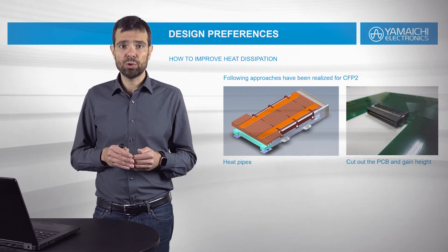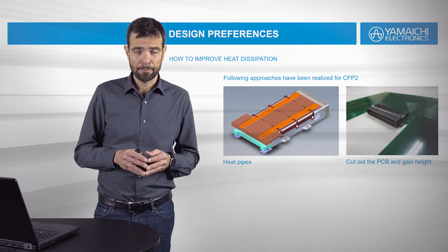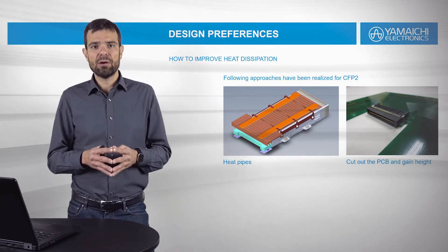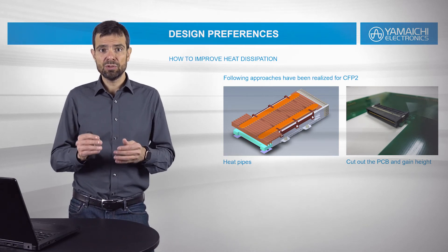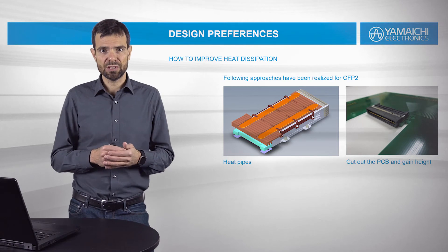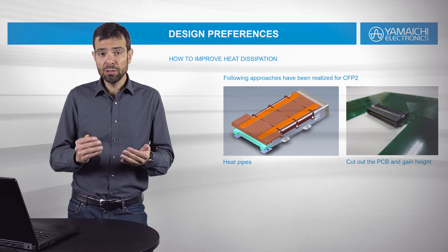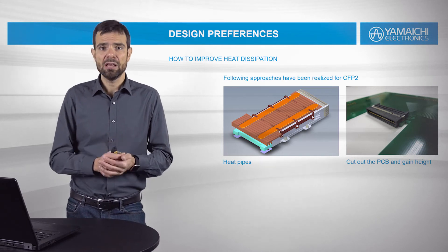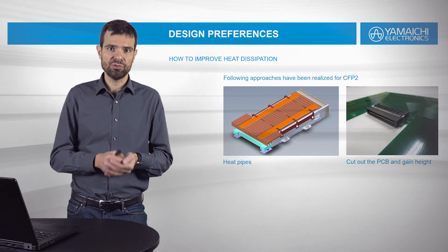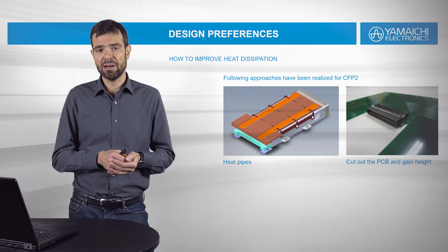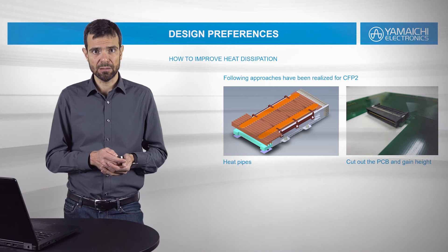A less orthodox approach to improve heat dissipation is to cut out the PCB. Cutting out the PCB allows you to gain some height, which can be used to improve the airflow or to increase the fins of the heat sinks. Or, as a last option, you can reduce the height of your housing and realize a half-size rack unit OTN device equipped with CFP, which is quite flat and compact.